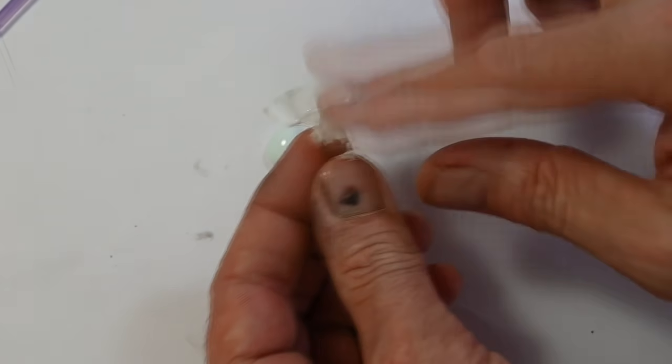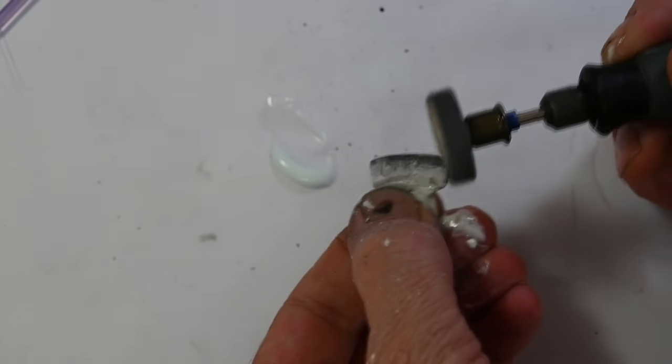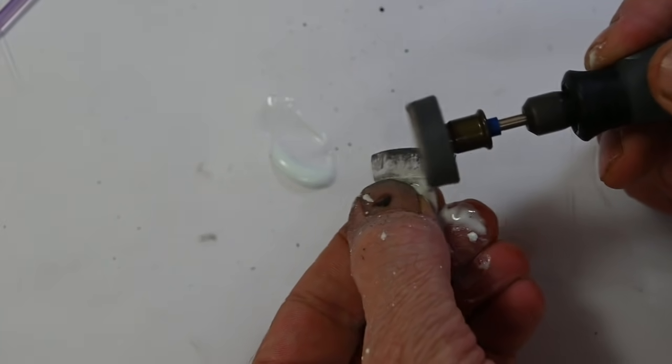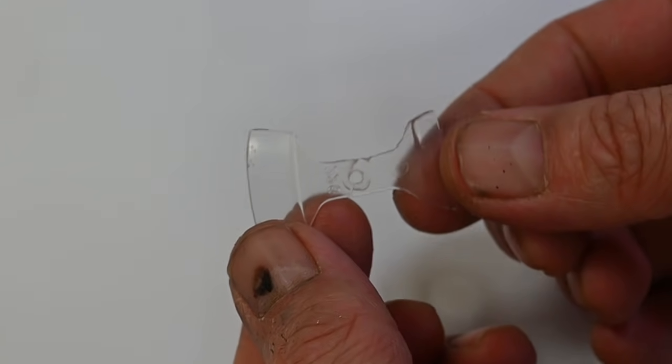So some plastic polish, a bit much there, but she'll be right. Then I give it a jolly good polish, and that's all. Did end up breaking a bit more in the middle.